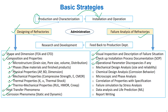Further steps include mechanical design analysis covering size and reliability, which can be synchronized from the design component and the used component. Chemical design analysis, fundamentally corrosion behavior. Microscopic and phase analysis after application or performing of the refractories. Correlation of properties with specification. Failure simulation by stress analysis, which can be done through FE and CFD. Data analysis and life prediction from previous one or two years of data, which can be done through machine learning.